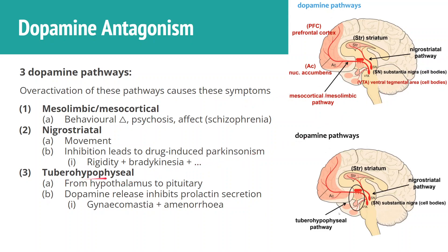The third one is the tuberoinfundibular pathway, which runs from the hypothalamus to the pituitary. Dopamine release inhibits prolactin secretion, so by blocking this pathway, we end up with hyperprolactinemia, which leads to things like galactorrhea, amenorrhea, and gynecomastia.